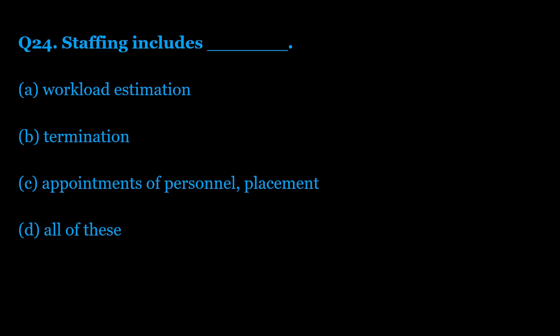Question number 24: Staffing includes — Option A: workload estimation. Option B: termination. Option C: appointments of personnel and placement. Option D: all of these. The correct answer is Option D — all of these. Staffing includes workload estimation, termination, appointment of personnel, and placement.